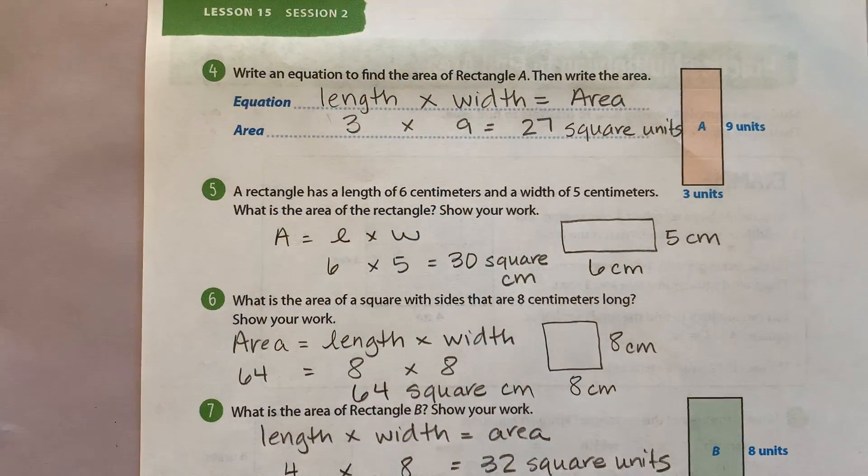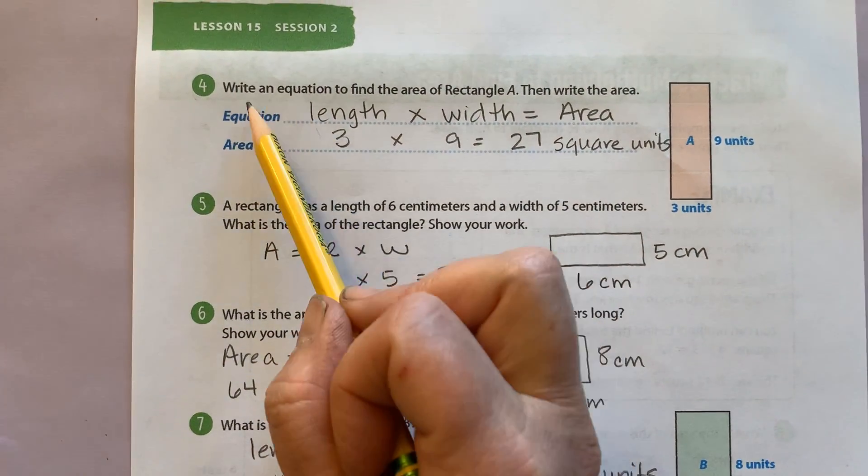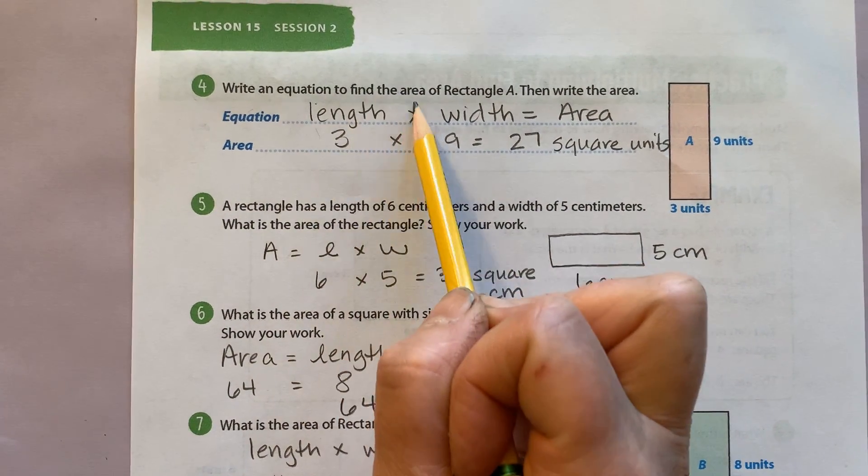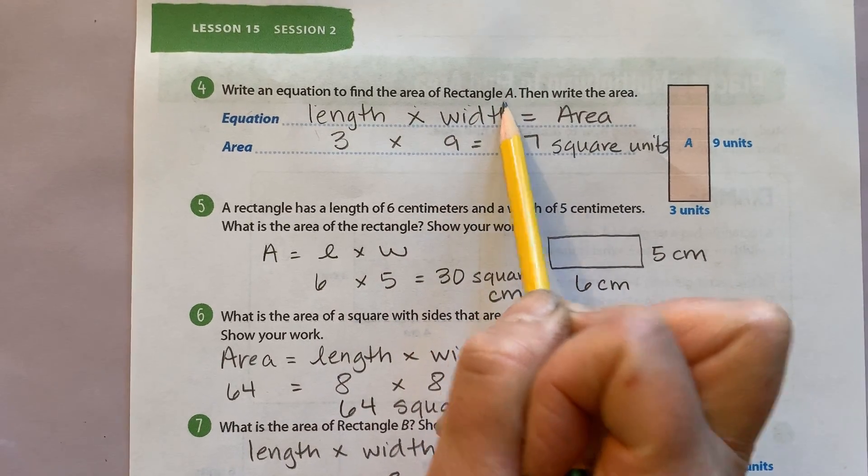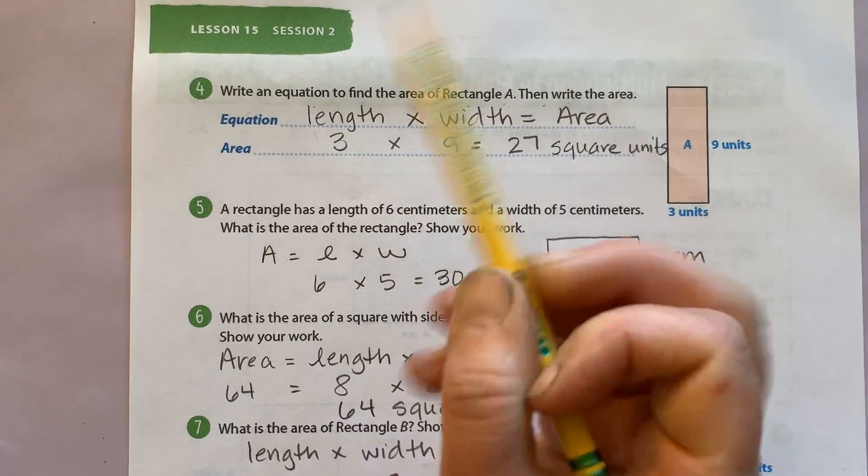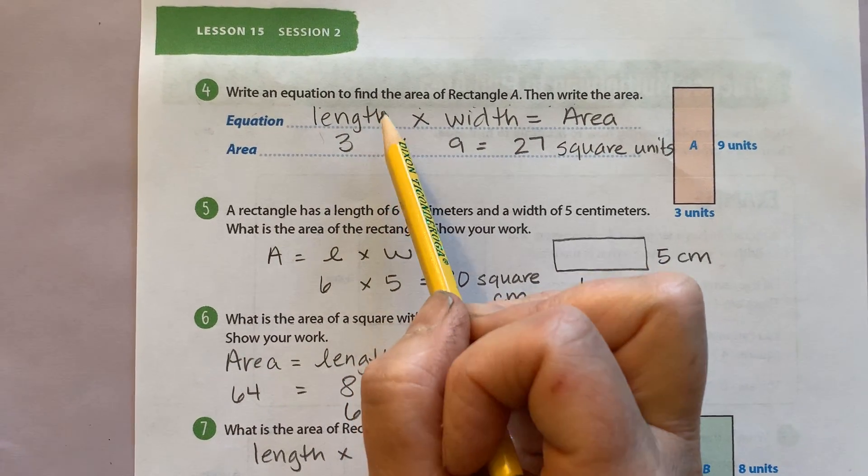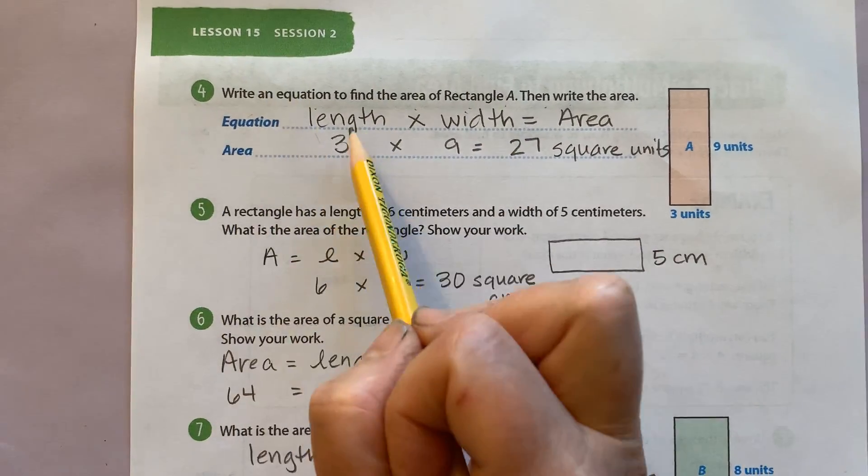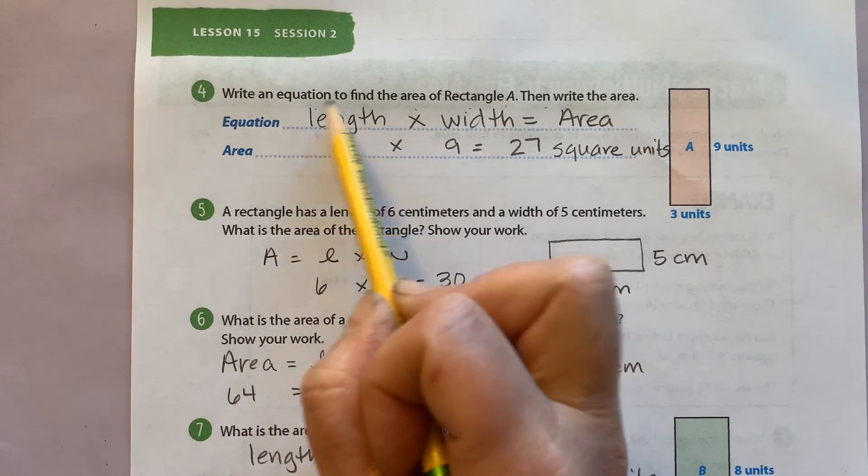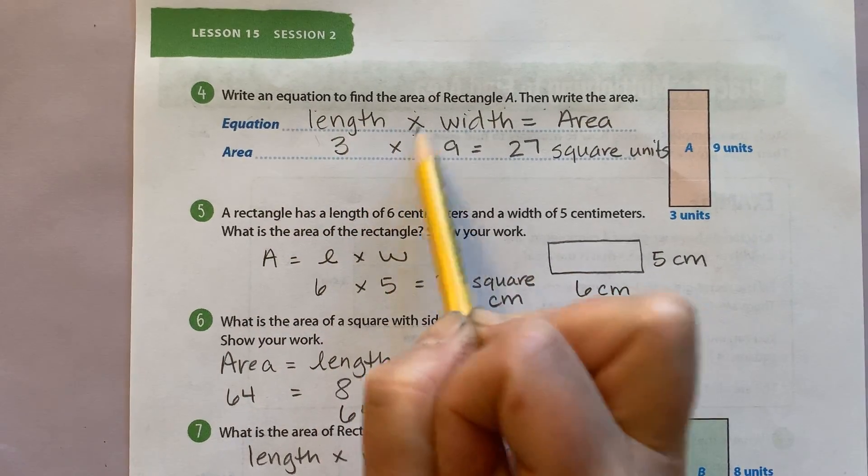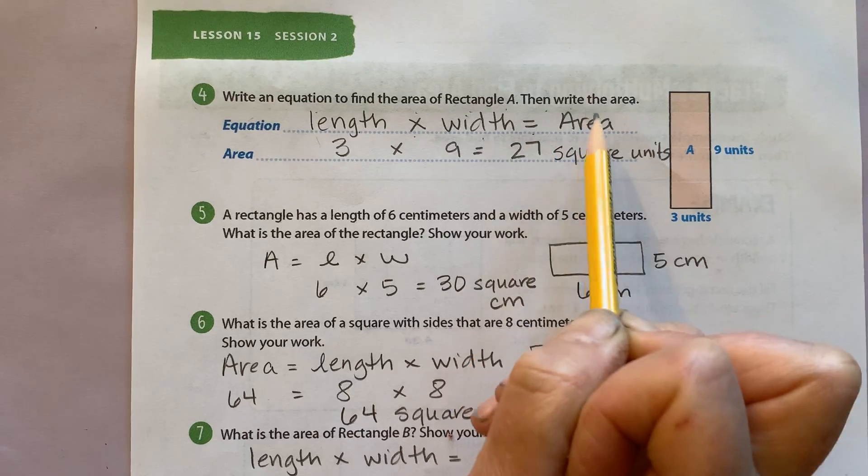Okay, let's turn to page 324. Number four, write an equation to find the area of rectangle A. Then write the area. It's important to keep practicing this equation so you remember it when you get to fourth grade. Remember, our equation is if we take the length and we multiply it by the width, we get the area.